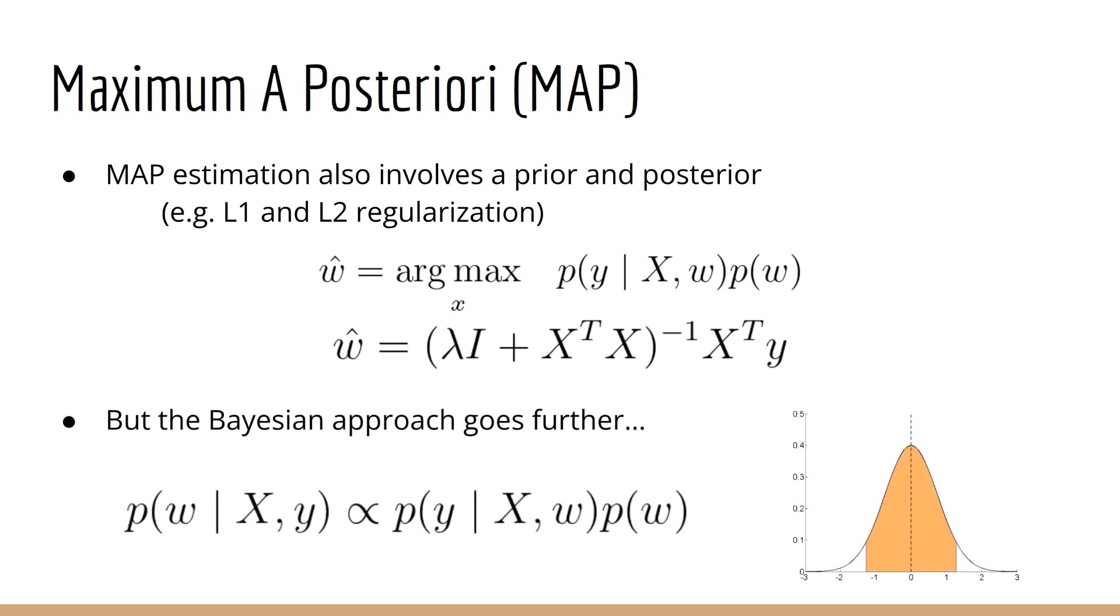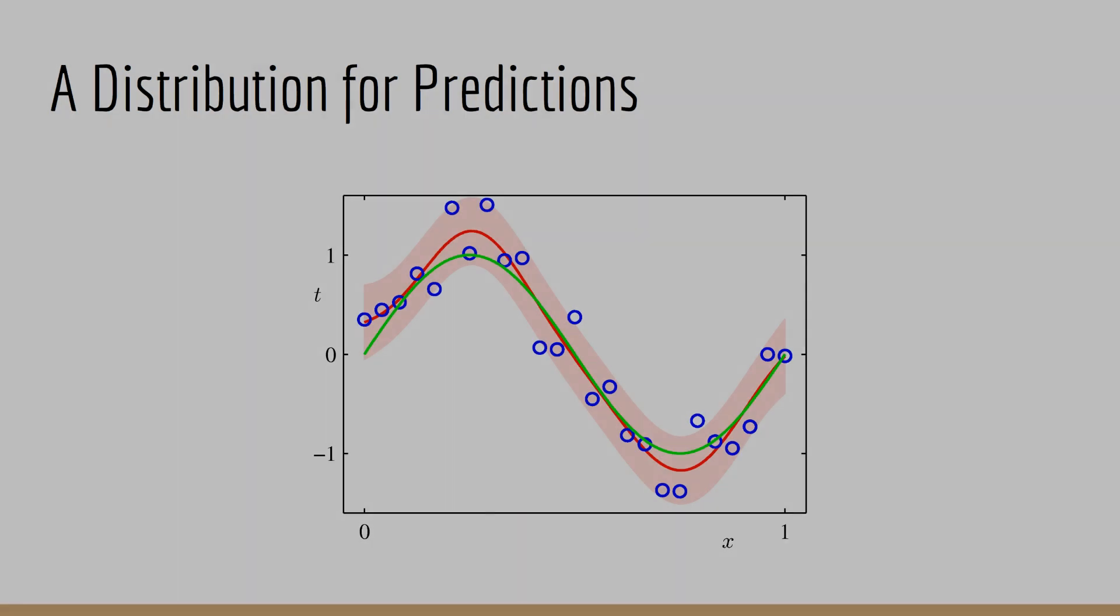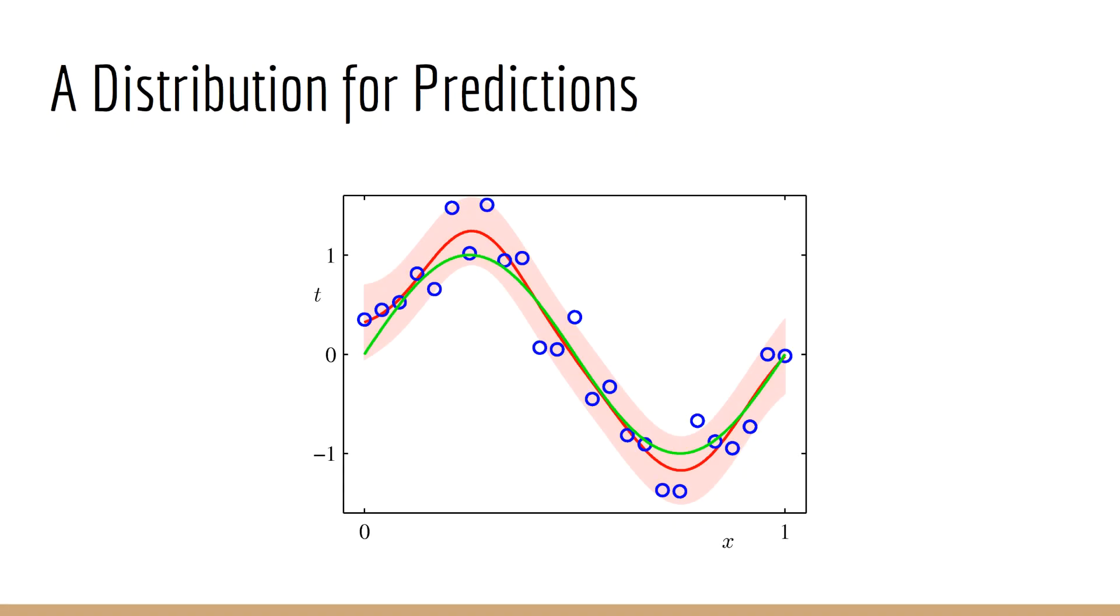Instead of finding a W hat, we instead express our knowledge about W using the posterior distribution itself. Even more interestingly, we do the same for the predictions. Instead of a point estimate y hat, we get a distribution over the output y, given some input x.